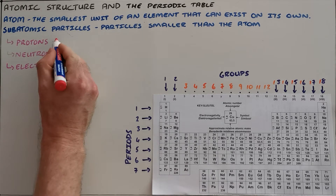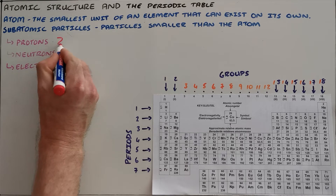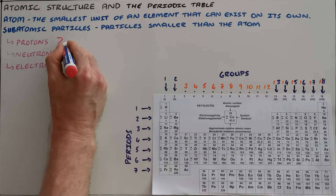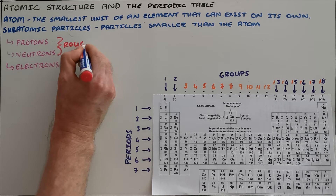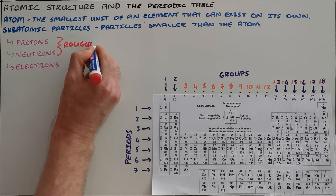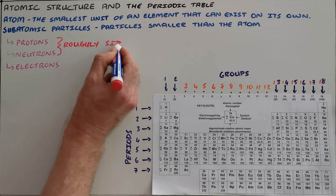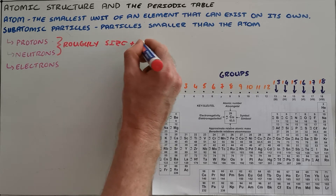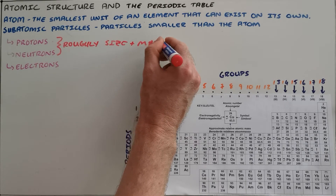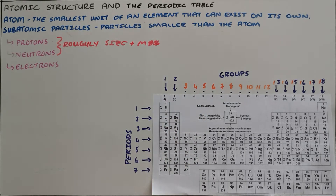It is important to note that the protons and neutrons are roughly the same size and mass as each other, whereas the electrons are much smaller and lighter than the protons and neutrons, and they move much faster than the protons and neutrons.